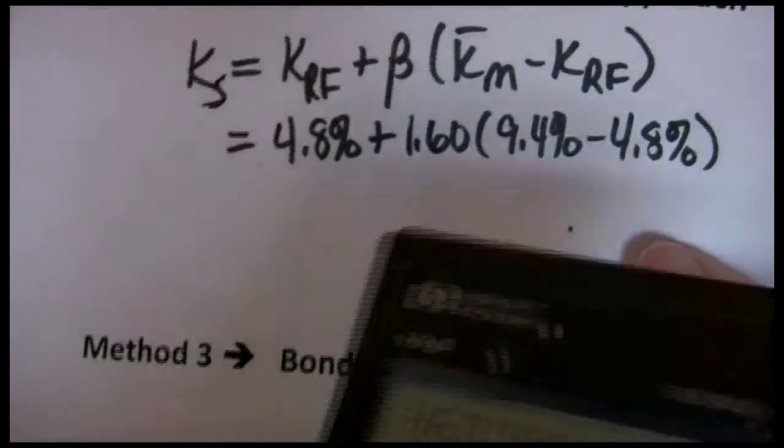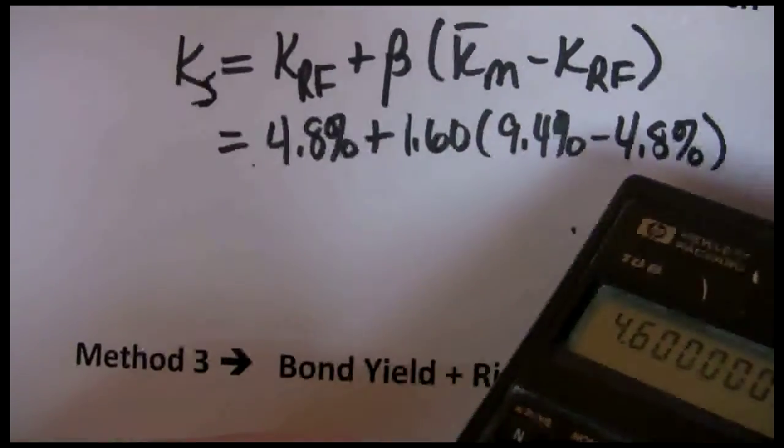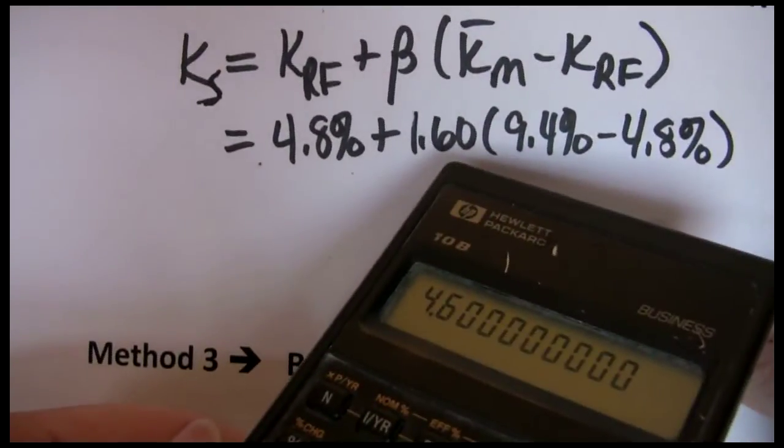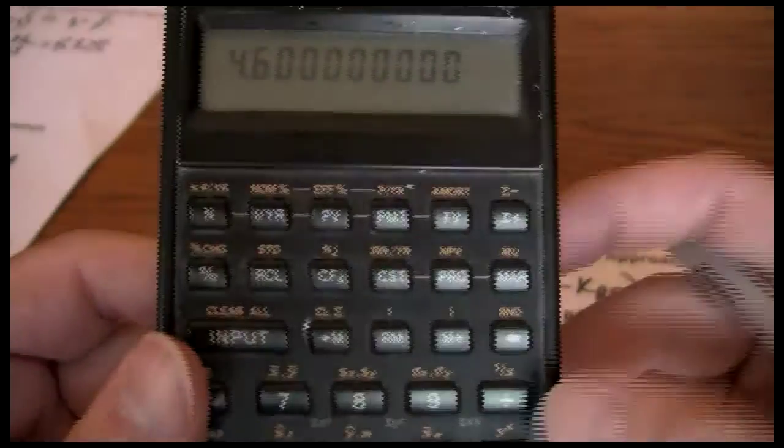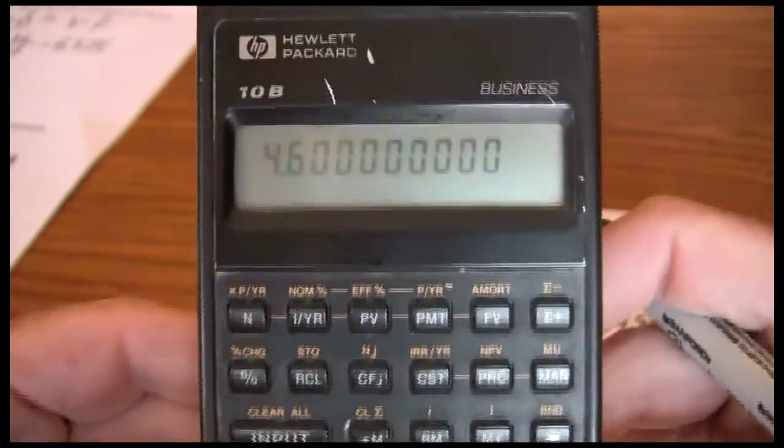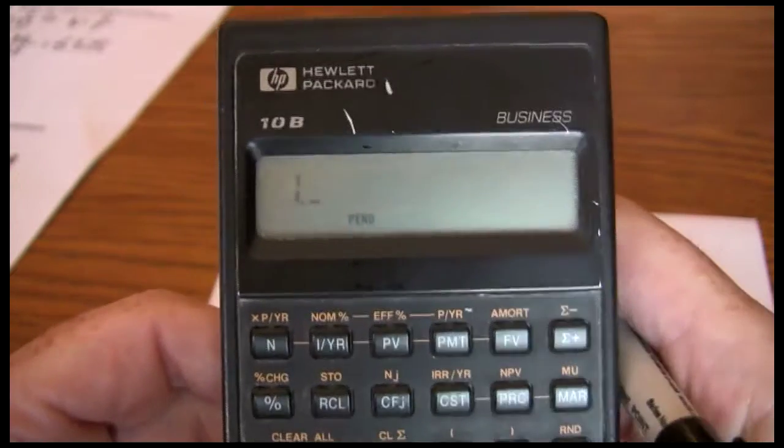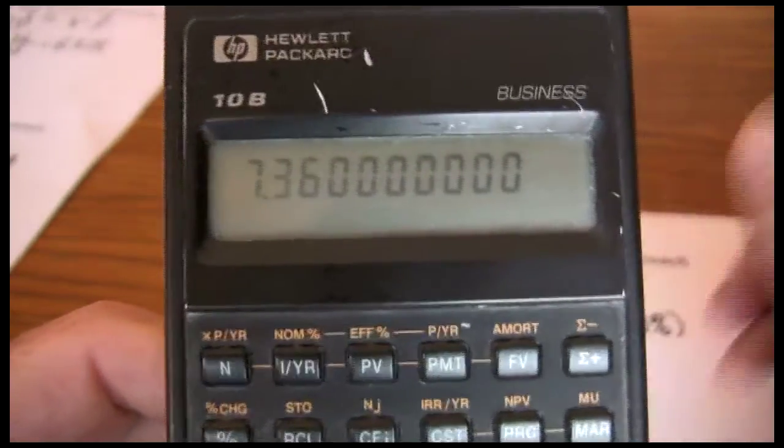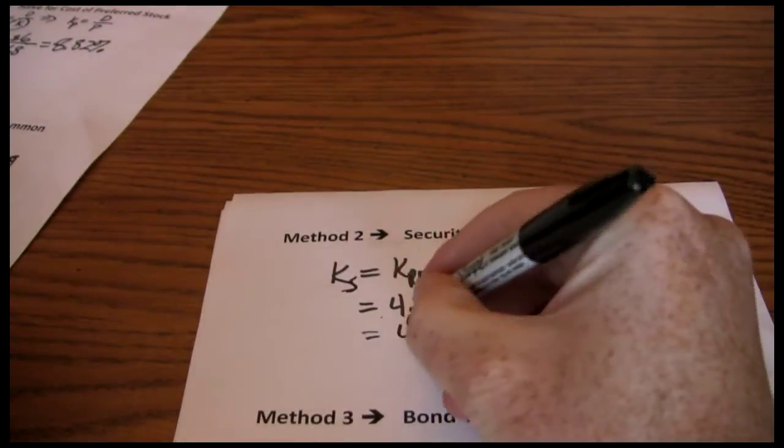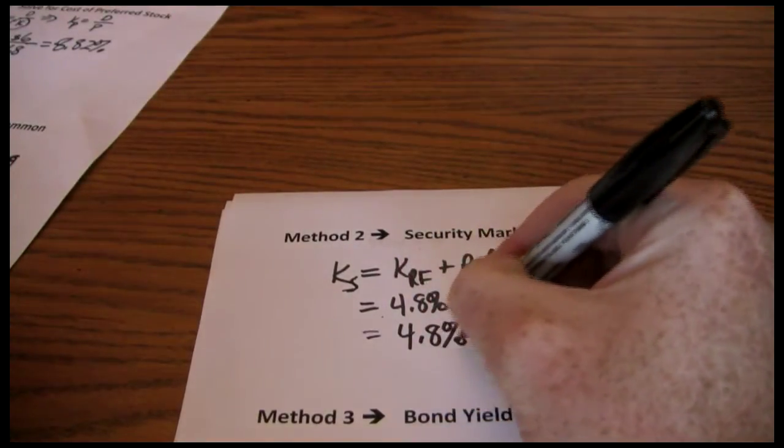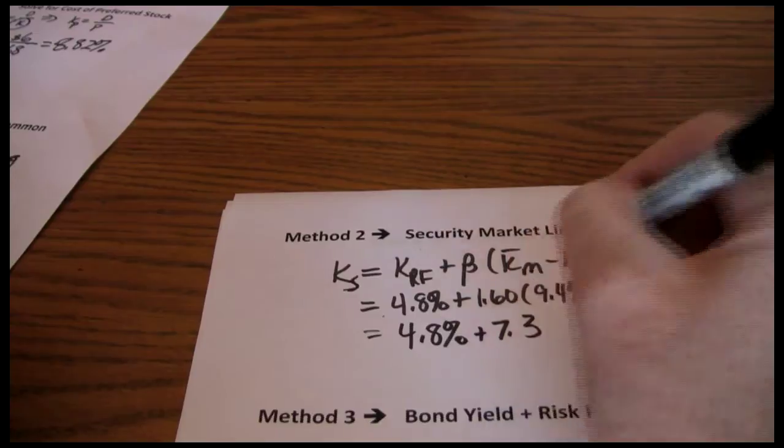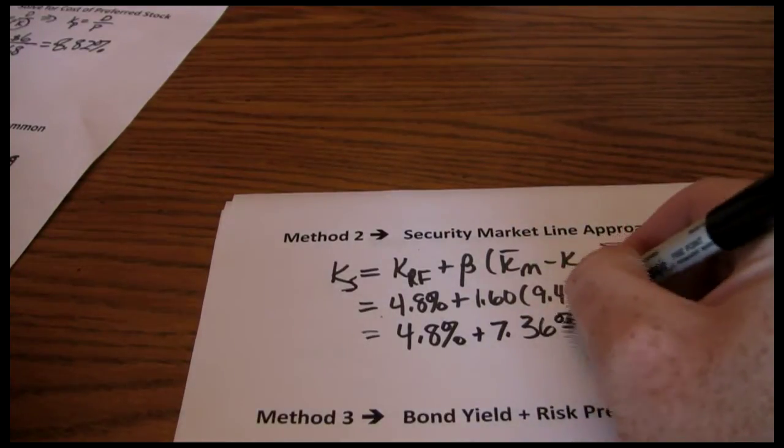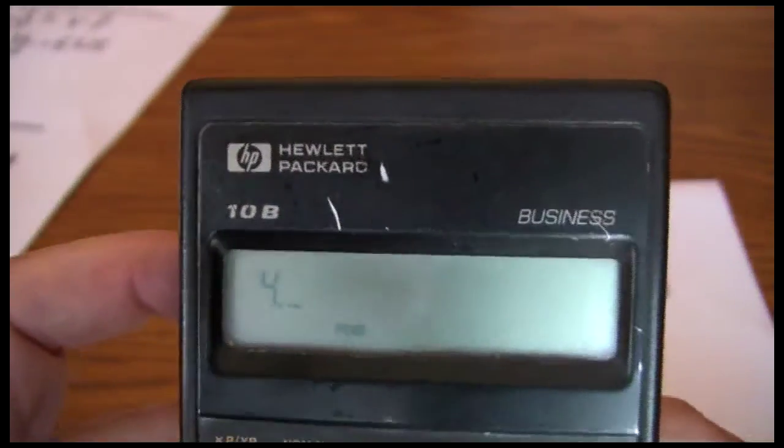Now we've done within parentheses and gotten 4.6. Now next in order of operations is multiplication. So we multiply by 1.6. Now we get 7.36. Now we're down to 4.8% plus 7.36%. So we just add that 4.8. We get 12.16% as our cost of common stock financing.